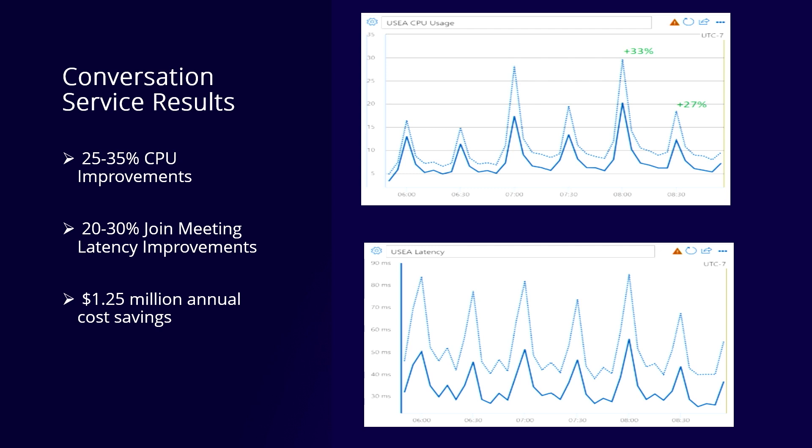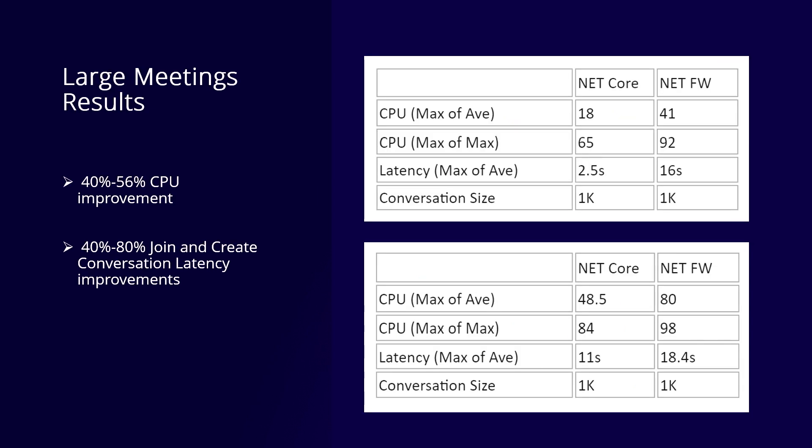The conversation service results were very interesting as well. We were able to see CPU improvements of around 25 to 35%, which was huge. For join meeting latencies, we observed 20 to 30% real latency improvements — going from around 90 milliseconds to 50 milliseconds. We were also able to save around $1.25 million annually, which is a significant saving.